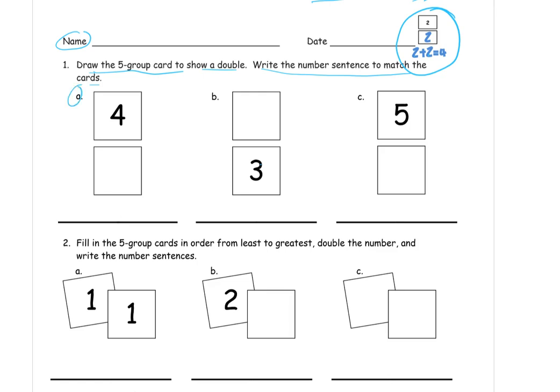So for A, we have 4, and we're going to draw the other card 4. So then we write the number sentence to match the cards. 4 plus 4. Now, remember the 5 group cards. If you have them, you can just turn them over. On the other side, you don't have to draw this. But in case you don't have them, or you don't remember what these are, or you didn't use them before.